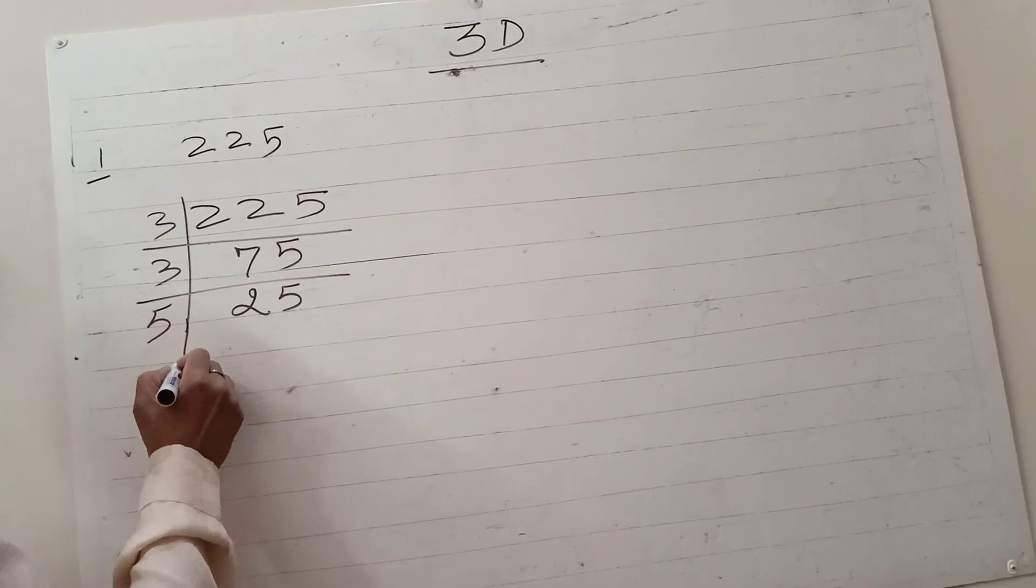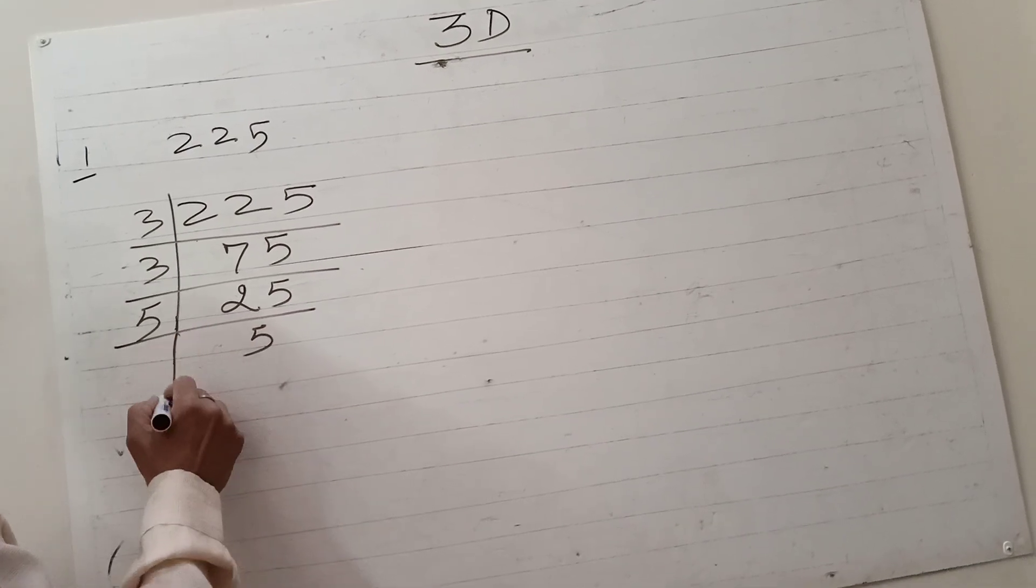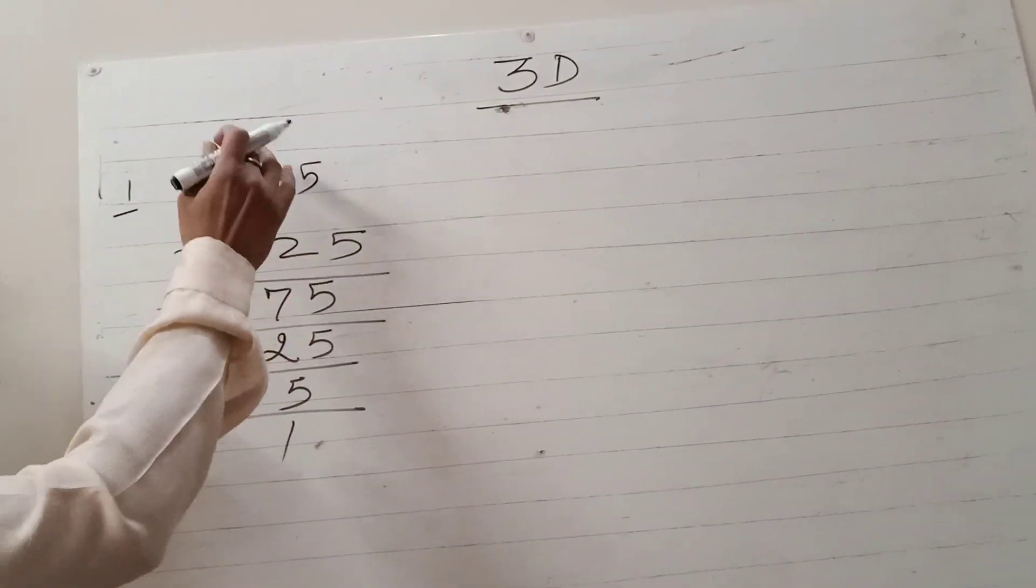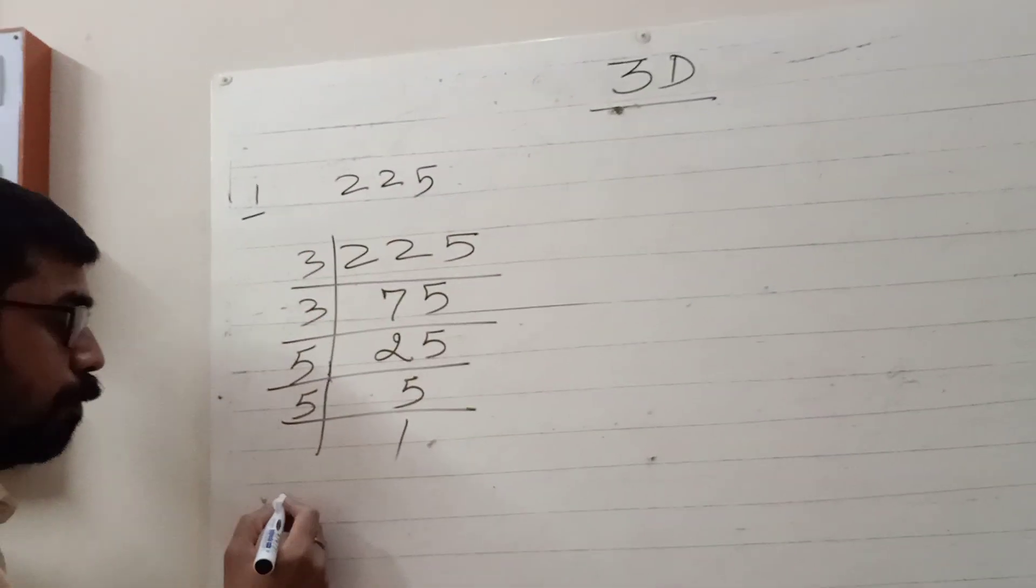5 goes into 25 to get 5, and 5 goes into 5 to get 1. Now to find out the square root, we will write square root of 225.